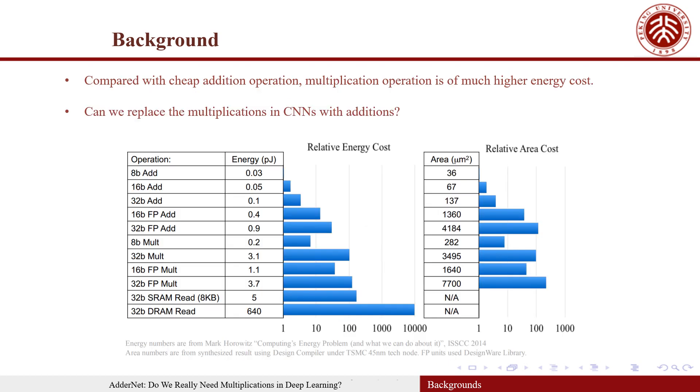As the table shows, compared with cheap addition operation, multiplication operation is of much higher computation complexity. For example, the 8-bit addition only costs 0.03 picojoule energy, while the 8-bit multiplication costs 0.2 picojoule energy, which is a large difference.